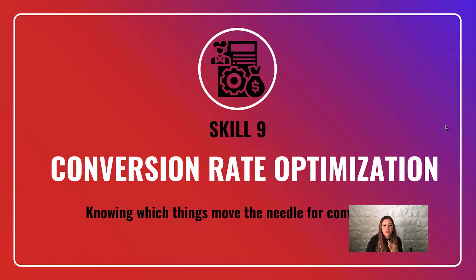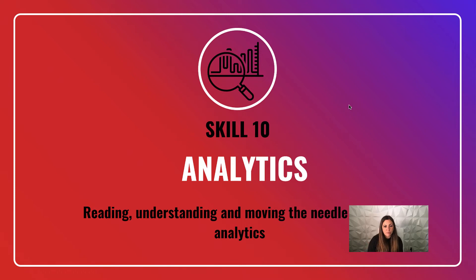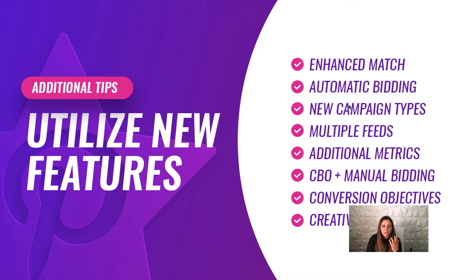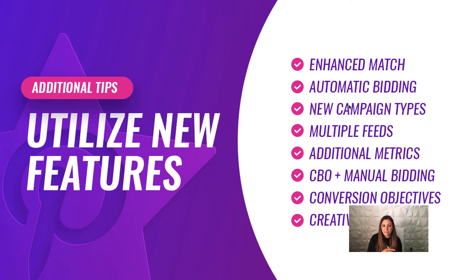Know your analytics and how to read them as you begin to optimize ads, looking for cost per lead inside Pinterest. Maximize your cross-channel tracking and utilize new Pinterest features — enhanced match with email tracking, automatic bidding (only about eight or nine months old), new campaign types, more specific targeting options including last-click targeting, multiple feeds, and additional metrics for idea pins. Also consider manual bidding versus automatic bidding versus CBO campaigns where Pinterest finds audiences for you — and keep up with all the creative changes happening.